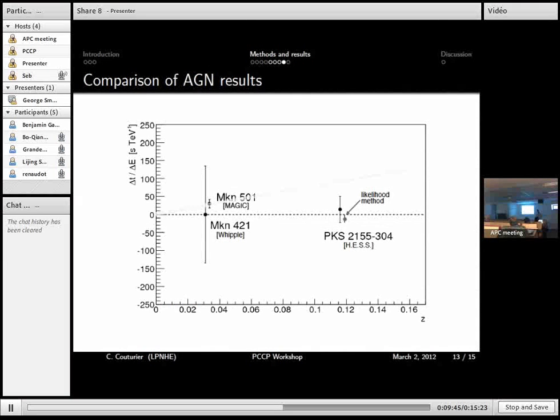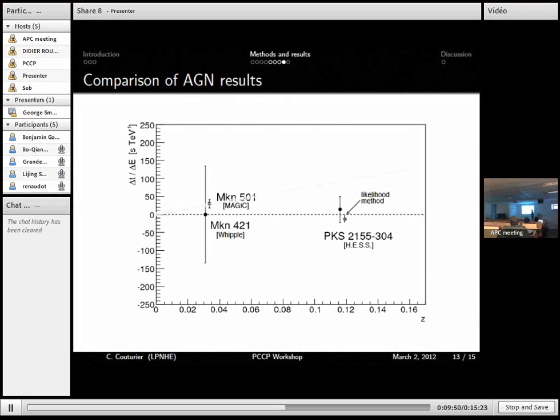And if we look at those three, two results, three results. So here is the time lag in function of the redshift. So before PKS 2155, we could have thought that there would have been a linear dependence on the redshift. That's the time lag would depend linearly on the redshift. But since we measured PKS 2155, we have to reconsider this idea.